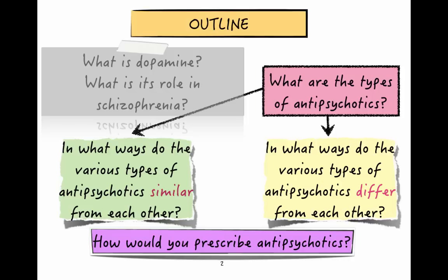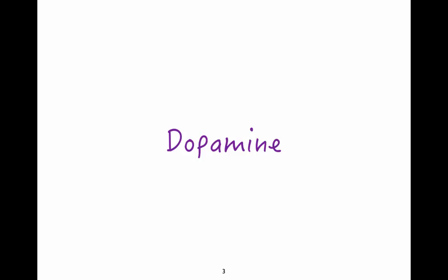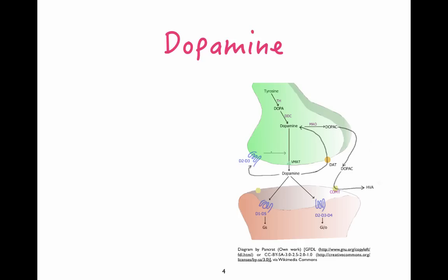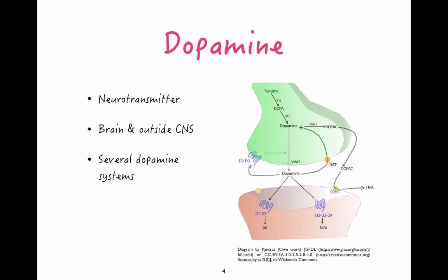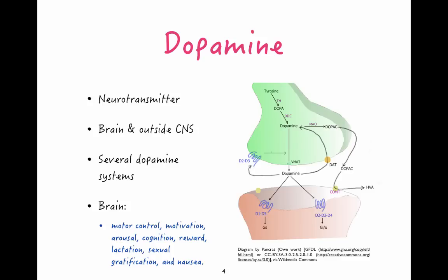Lastly we'll talk about how to prescribe antipsychotics and what issues we have to consider. Now let's review: what is dopamine, how is it made, and what is the role of dopamine in the body? Dopamine is a neurotransmitter, which is a chemical that sends signals from one neuron to another. It can be found in the brain and also the rest of the body, and in the brain dopamine plays an important role in motor control, motivation, arousal, cognition, and reward.